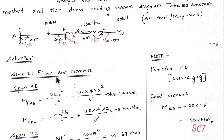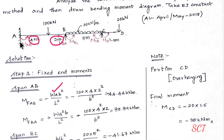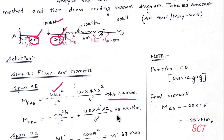First, we can find the fixed end moments. Span AB: the formula is minus W·A·B² divided by L², which gives the near end moment from B as plus W·A²·B divided by L². With W = 100 kN, A = 4, B = 2, this gives minus 44.44 kN and plus 88.89 kNm.